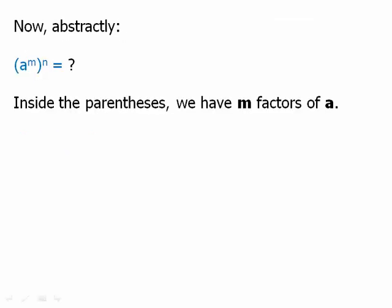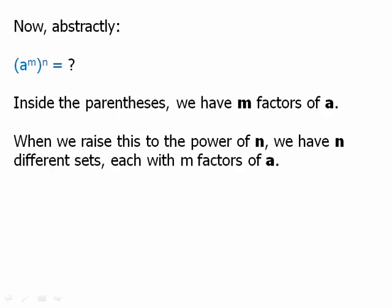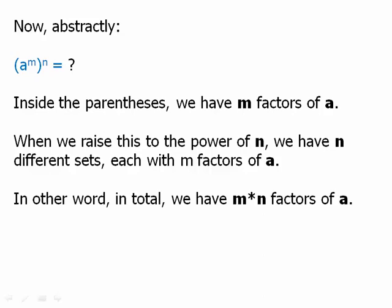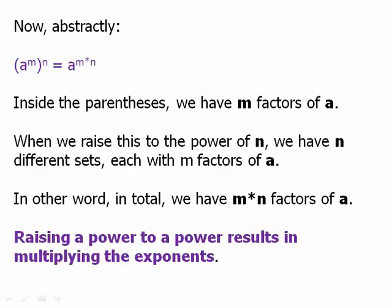Now we'll do this a little more abstractly. Inside the parentheses we have m factors of a. When we raise this to the power of n, we have n different sets each with m factors of a. In other words, we have a total of m times n factors of a. So the exponent has to be a to the m times n. That's our law of exponents: raising a power to a power results in multiplying the exponents.